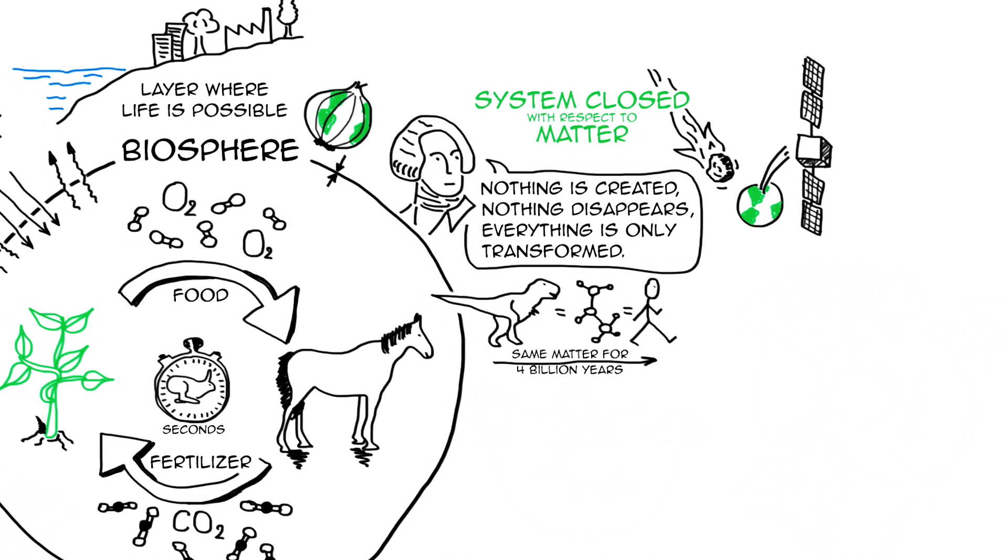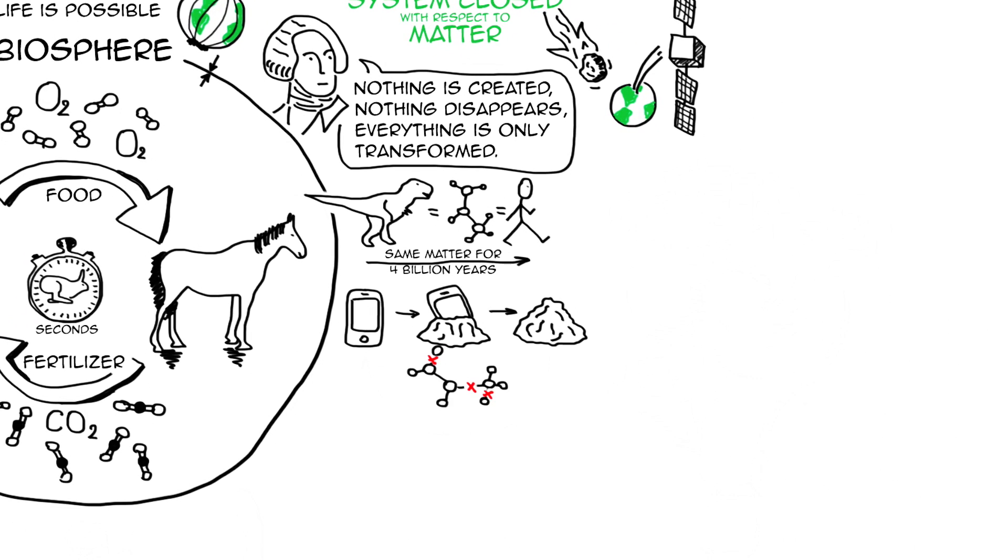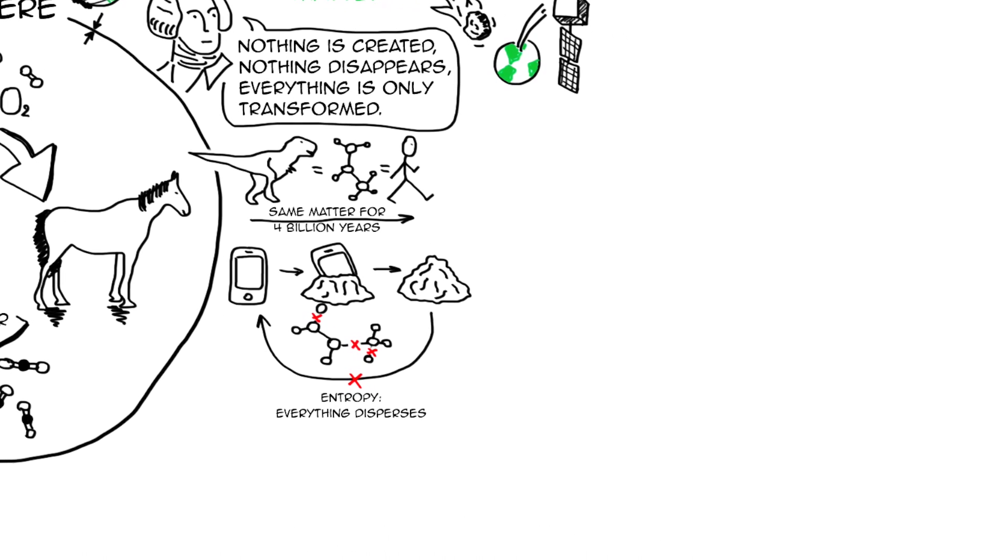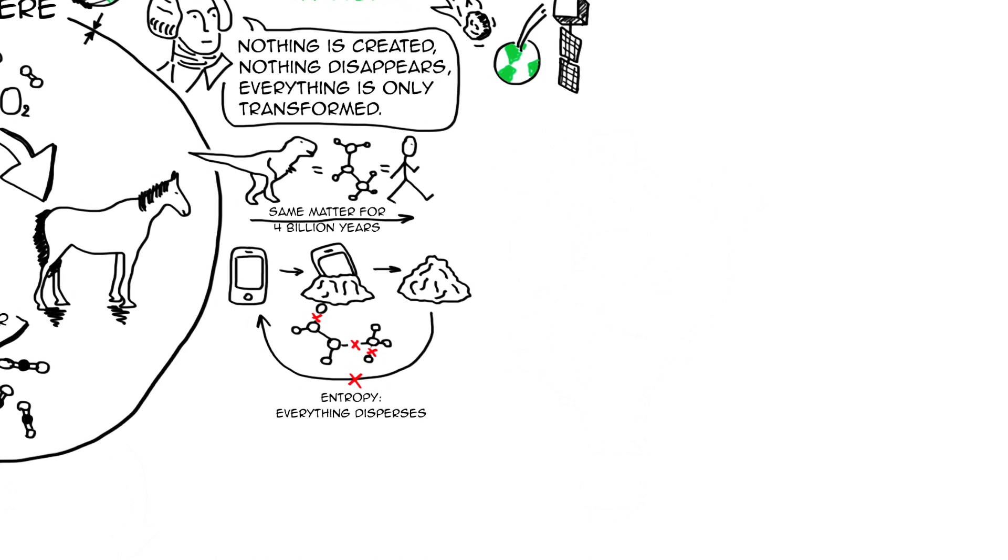And the other thing that comes with this is that everything has a tendency to disperse. So for example, take an iPhone and wait for a million years, it's very likely that you will get a pile of dust. Take a pile of dust and wait for a million years, you will never get an iPhone. It works only in one direction. This is also known as the second law of thermodynamics, the law of entropy.